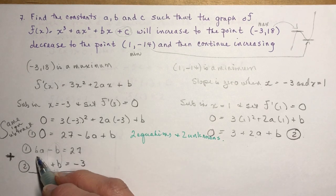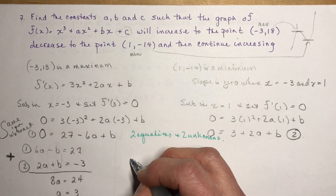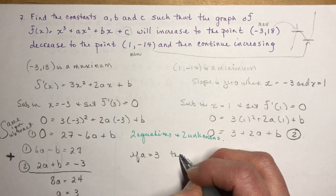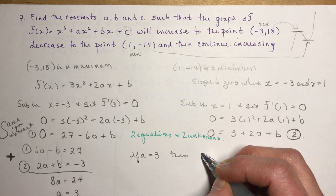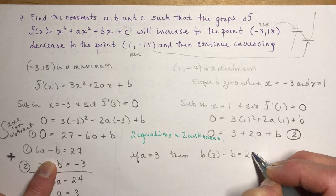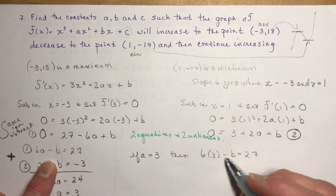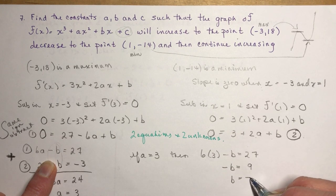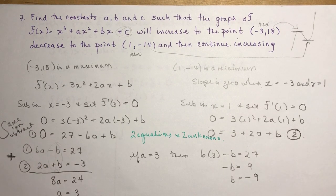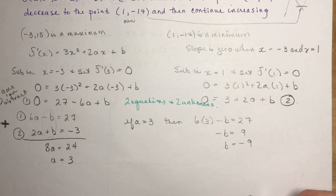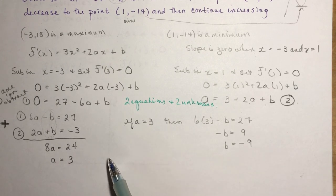So now I can find b because I can use either of these equations. So if a = 3, then 6(3) - b = 27. That's 18. So -b = 9, and b = -9. So right now you've got 80% of the question right. We've got a = 3, b = -9, and I need to find c.